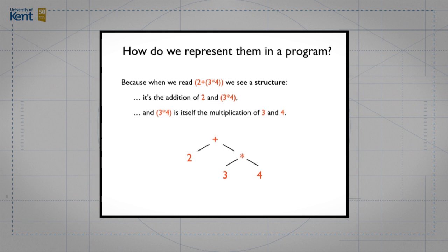So on the left we have the number 2, and on the right we have a multiplication. And itself is a structure multiplying the numbers 3 and 4. So there is a much clearer representation of what's inside that expression than the simple sequence of characters.